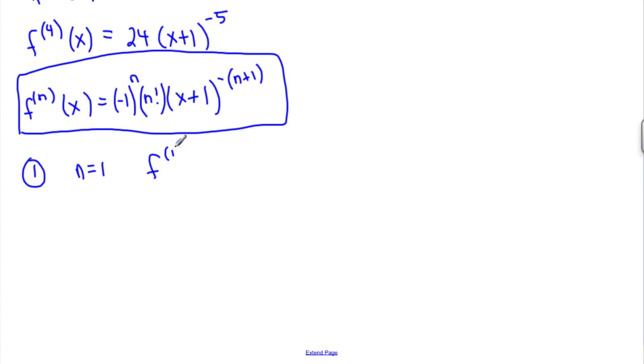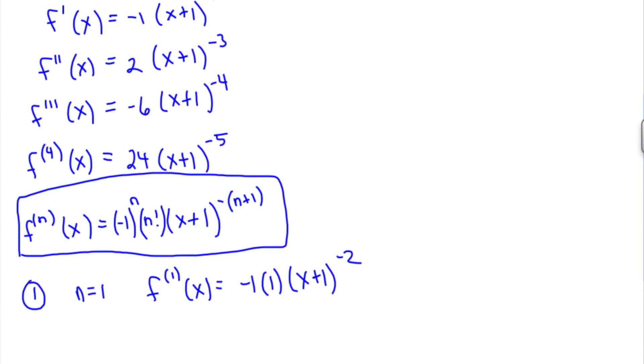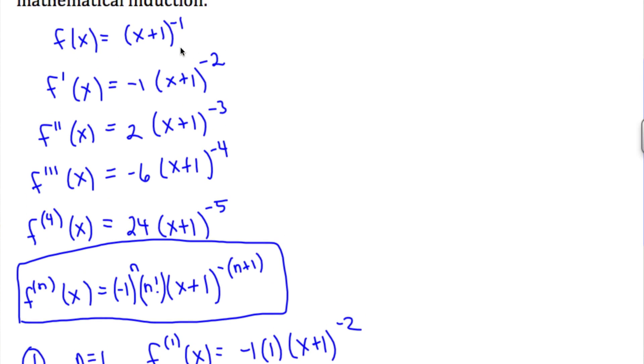f parenthesis 1 or f prime of x. Plug in 1, we get a negative. Plug in 1 here, we get just 1. x plus 1 to the plug in 1 here, we get minus 2. And you can see that's identical to what we got for the first derivative.